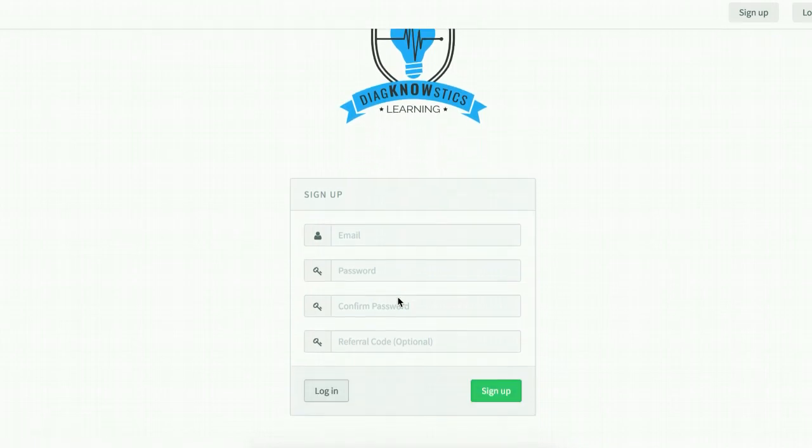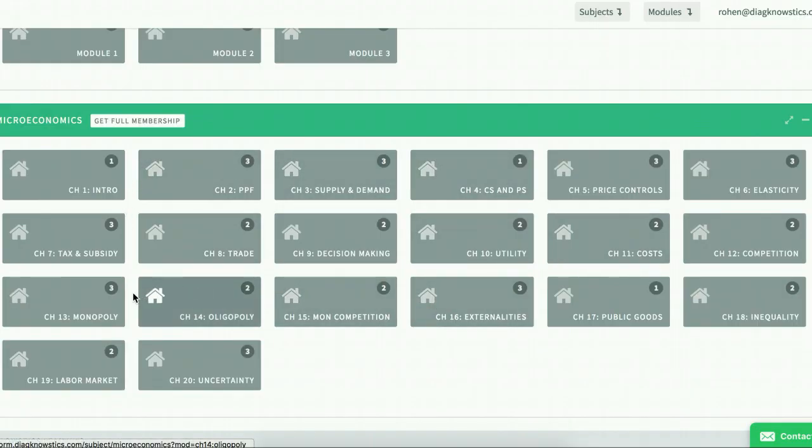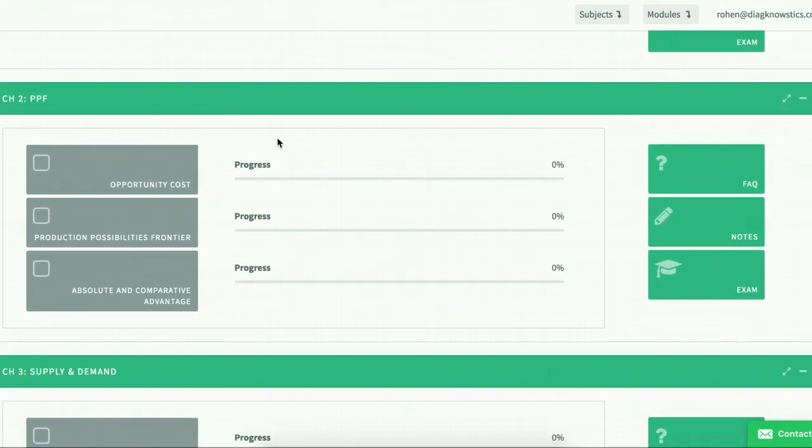Signing up is easy. The 20 modules for microeconomics align with your standard 20 chapters of an econ textbook. The main thing for each module here are these topic breakdowns.